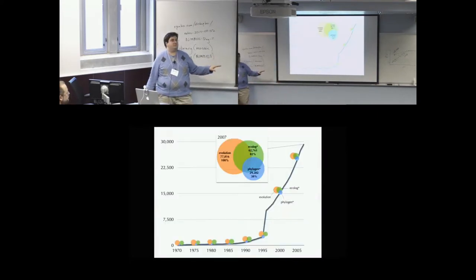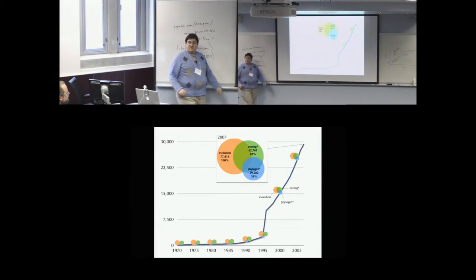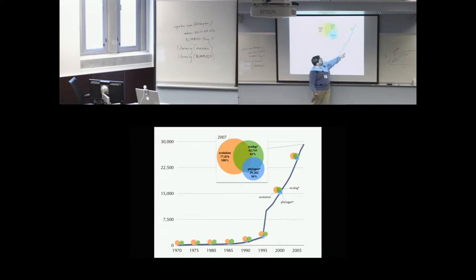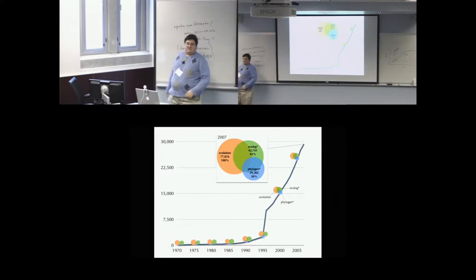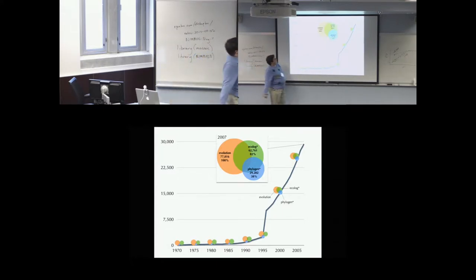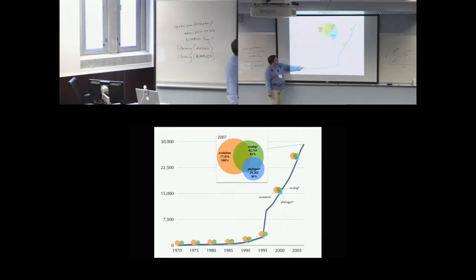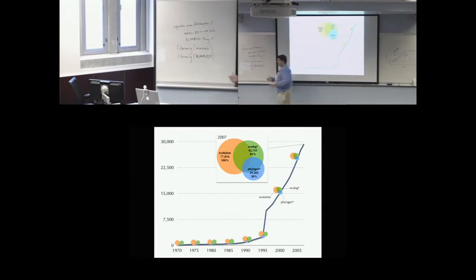We can get all these questions from basic natural history, a phylogeny, and the right methods. Because phylogenetics is so cool, here's a plot from a few years ago showing the number of papers with phylogenetics shooting up. We also see the overlap in fields — at first phylogenetics starts off inside of evolution, but it's becoming much more common across ecology and evolution. It's a big, growing field.